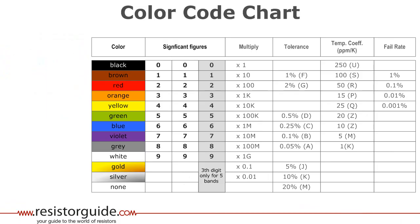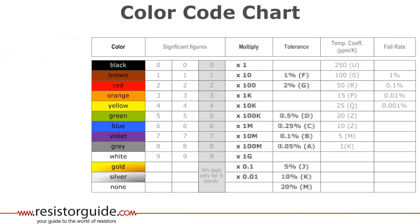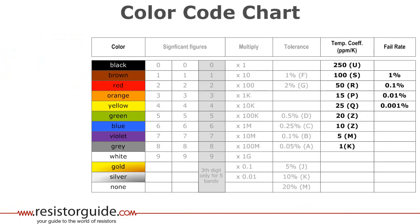Some bands indicate the significant digits of the resistance value, a multiply factor, the tolerance or for special resistor types the temperature coefficient or fail rate.